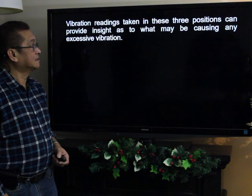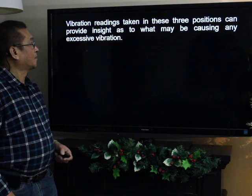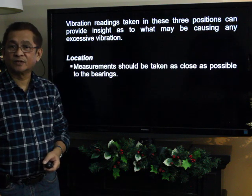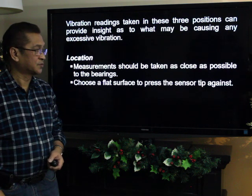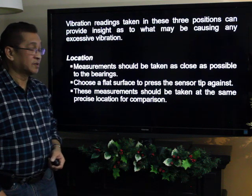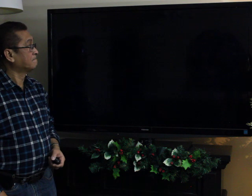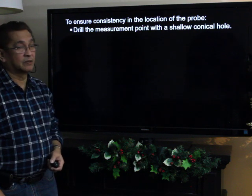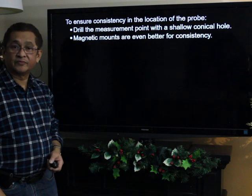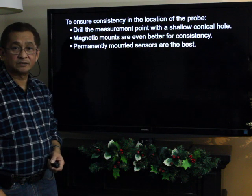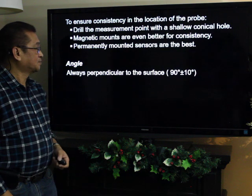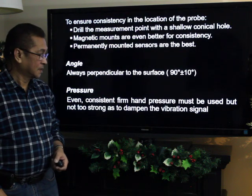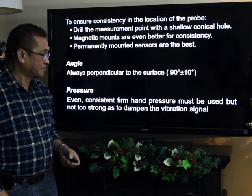Vibration readings taken in the three positions — axial, horizontal, and vertical — can provide insight into what may be causing the problem. Measurements should be taken as close as possible to the bearings on a flat surface, and at the same precise location for comparison. To ensure location consistency, drill the measurement point with a shallow conical hole. Magnetic mounts are even better for consistency, and permanently mounted sensors are the best option. The sensor should always be perpendicular to the surface, and consistent, firm hand pressure is needed — but not too strong, as it may dampen the vibration signal.